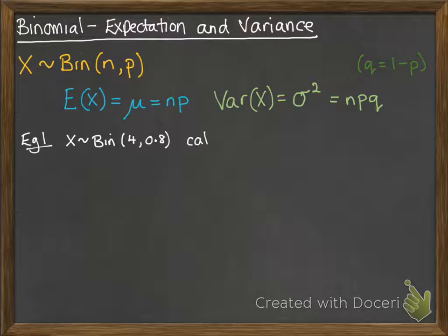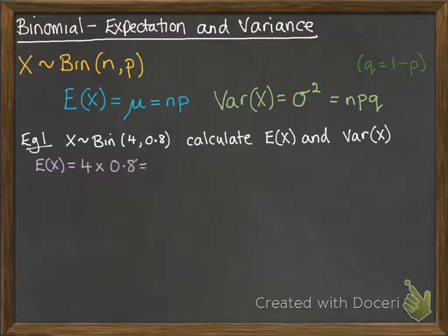Okay, so let's put this with an example. So we're finding the expectation of X and the variance of X. So E of X, 4 times 0.8, so that's 3.2.